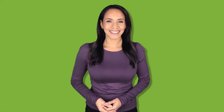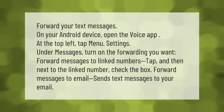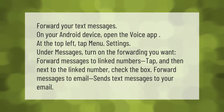To forward your text messages on your Android device, open the Voice app. At the top left, tap Menu > Settings. Under Messages, turn on the forwarding you want: 'Forward messages to linked numbers' — tap and then check the box next to the linked number. 'Forward messages to email' sends text messages to your email.